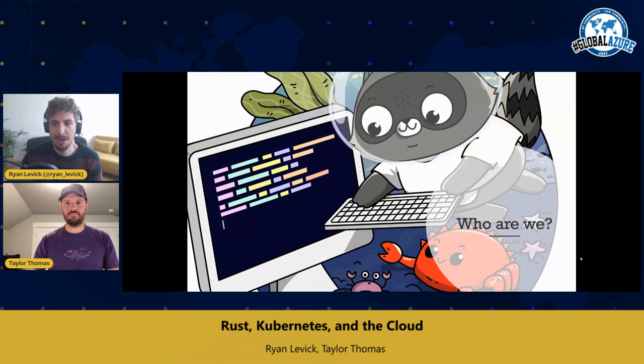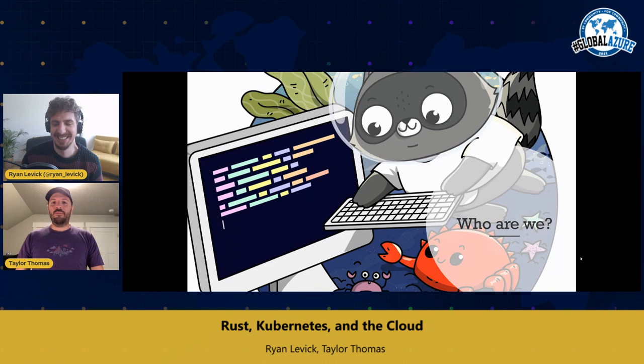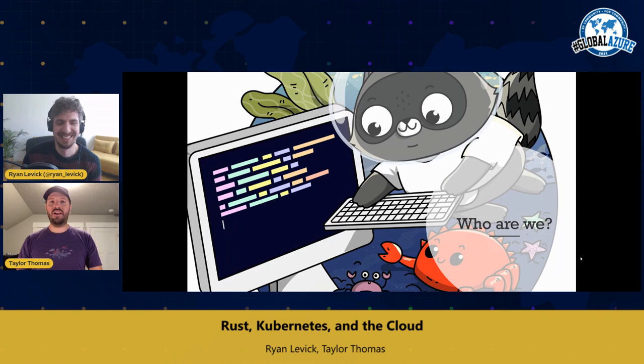Before we get started, who are we? I'm Ryan Levick. I'm a cloud developer advocate at Microsoft, and I spend all my days and weekends and nights thinking and dreaming about the Rust programming language. I'm Taylor Thomas. I am also a developer at Microsoft. I work more on the cloud native side, as we like to call it in buzzword language. A lot of my career has been in the cloud space and I do a lot of things with Kubernetes.